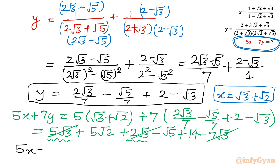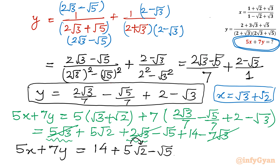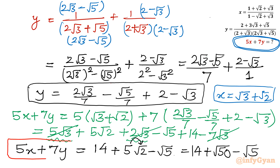So 5x + 7y = 14 + 5√2 − √5. We can write 5√2 as √(25 × 2) = √50, so the final answer is 5x + 7y = 14 + √50 − √5. I hope this video will be meaningful to you. Do not forget to like, share, and subscribe. Bye bye till the next video. Good luck and take care of yourself.